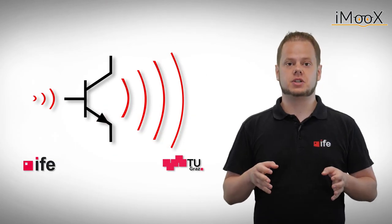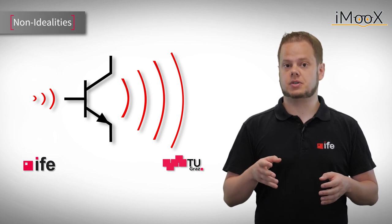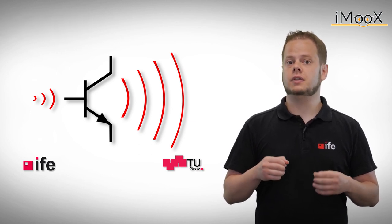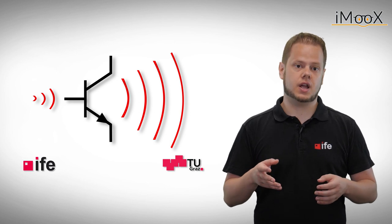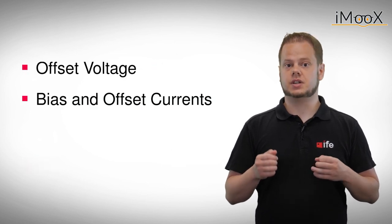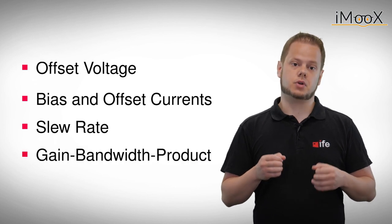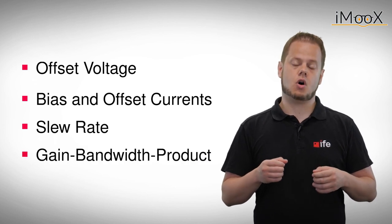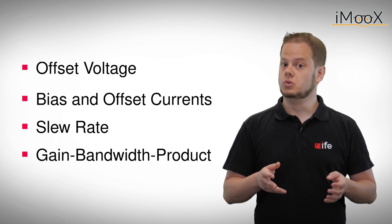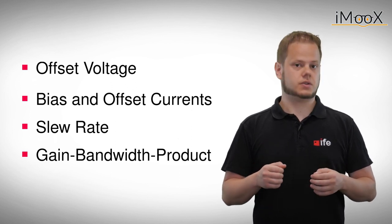All necessary information about these non-idealities are provided by the manufacturer in datasheets. The non-idealities we want to discuss today are the offset voltage, the bias and offset currents, the slew rate, and the gain bandwidth product. All of these depend on the operational amplifier you want to use in your design and even change from device to device.